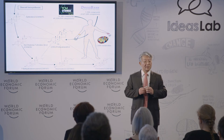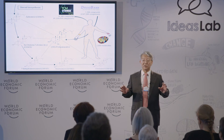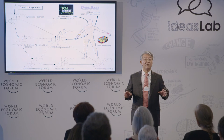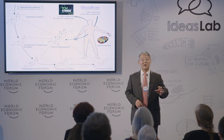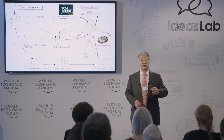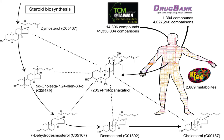Why are these natural compounds better than synthetic chemicals to treat diseases? We have intensively analyzed all known compounds in natural products and found that these compounds have higher similarity — especially structural similarity — to human metabolites. One of the compounds shown is from ginseng, which is similar to human metabolites, for example.